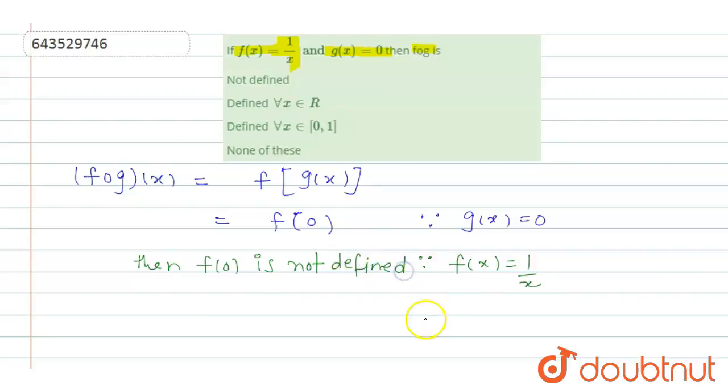So we can say that f of g is not defined. Hence, option A, which is not defined, is the correct answer.